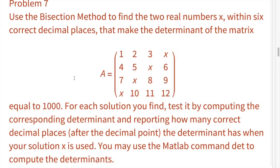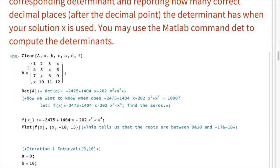Problem 7: use the bisection method to find the two real numbers x within six correct decimal places that make the determinant of matrix A equal to 1000. For each solution, test it by computing the corresponding determinant and reporting how many correct decimal places the determinant has. To begin, we define matrix A and take its determinant. We find the determinant equals a polynomial in x, and since we want it equal to 1000, we subtract 1000 from both sides to get our function.